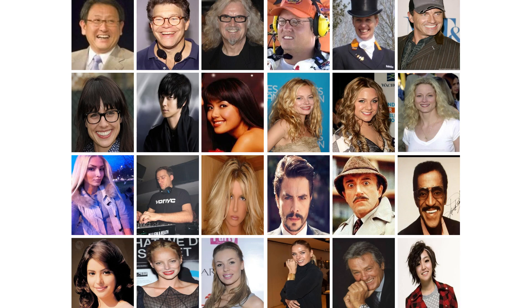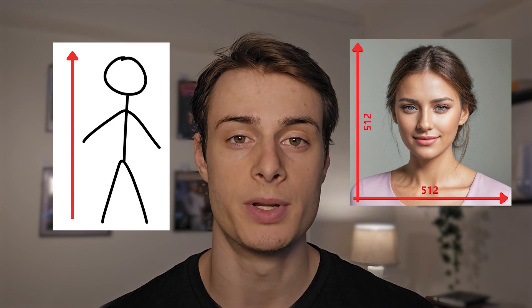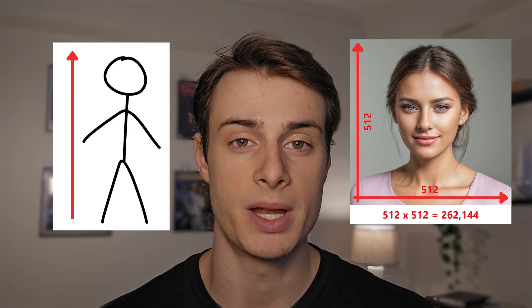Consider a distribution of images, say, human faces. For human heights, we have only one dimension, the height. But for a 512x512 pixel image, we have over 260,000 dimensions. The distribution is extremely complicated, so learning the distribution directly like we might for human heights is simply not feasible in this case.